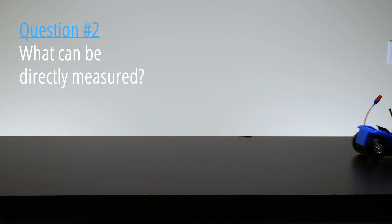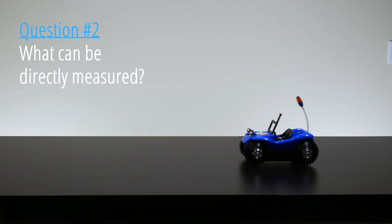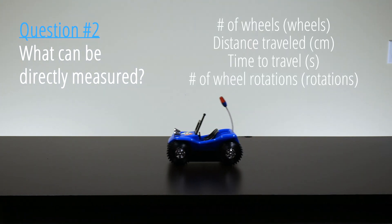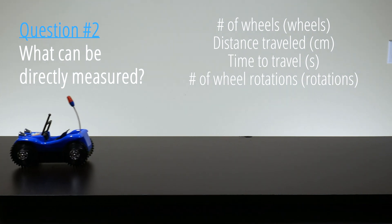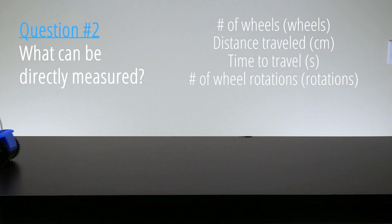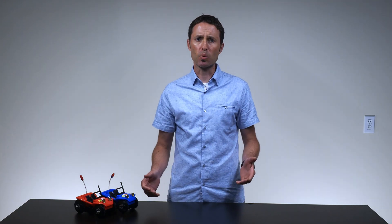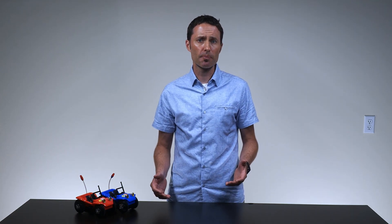Next, ask the students to identify what can be directly measured about the toy car. Also list these on the board. For each direct measurement, ask the students to identify what measuring tool they would use and what the unit of measure would be. For example, distance could be measured using a meter stick and the unit of measure would be inches or centimeters.